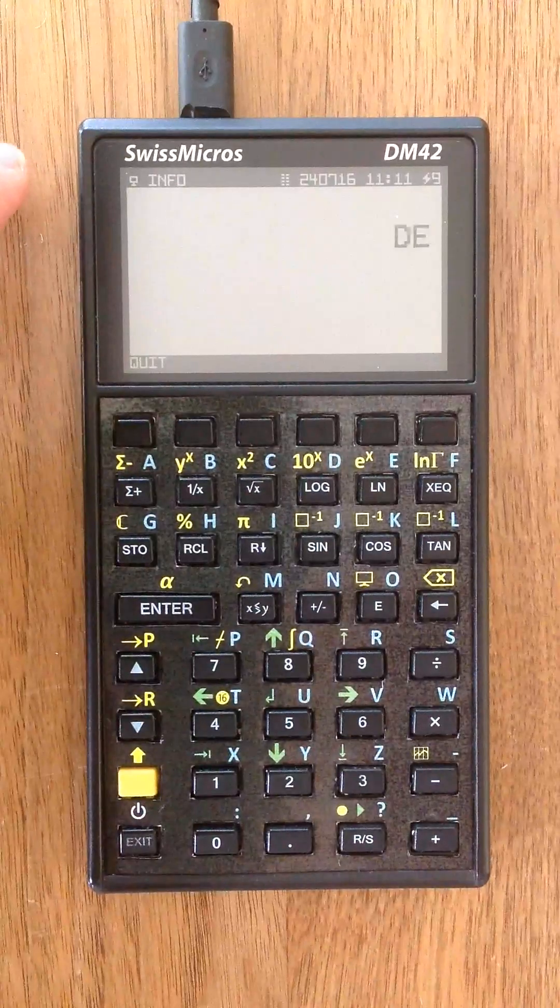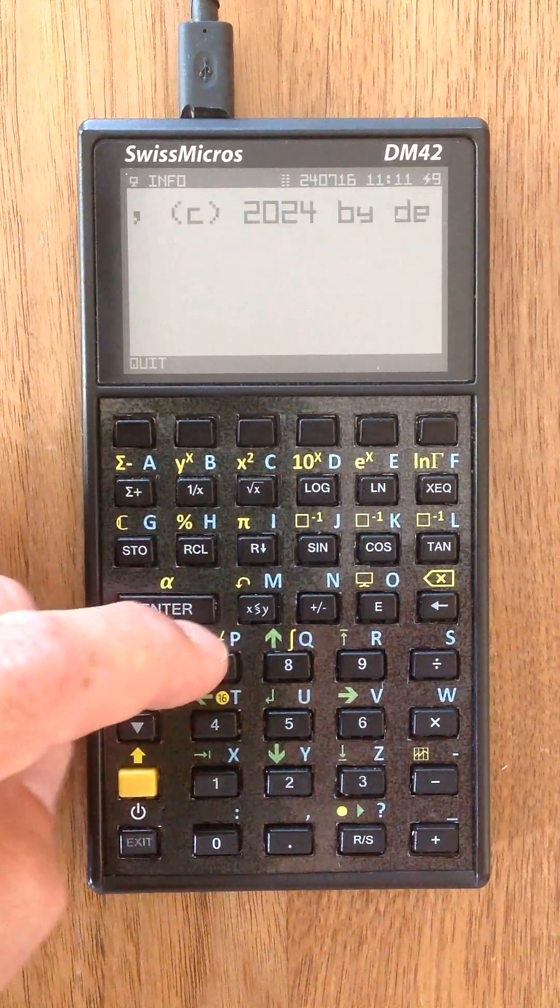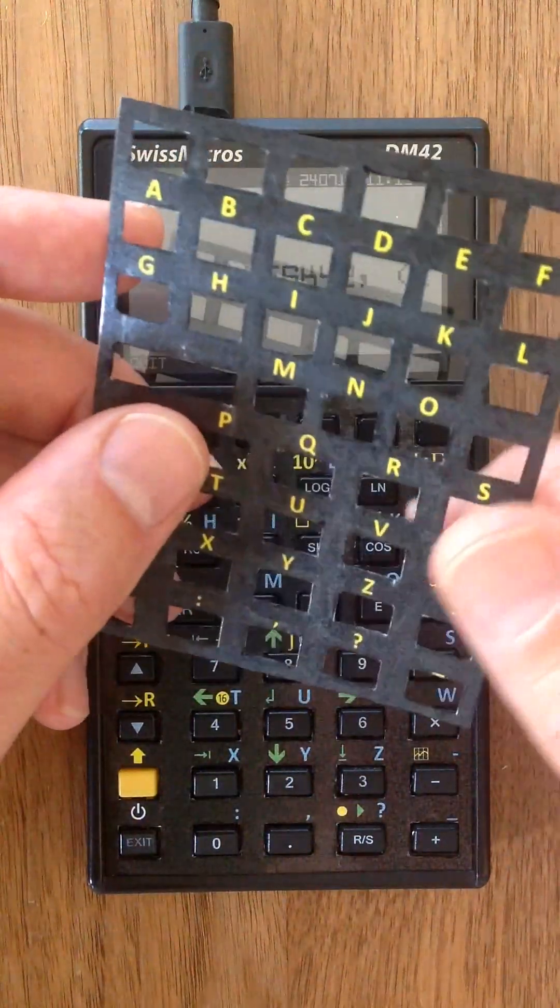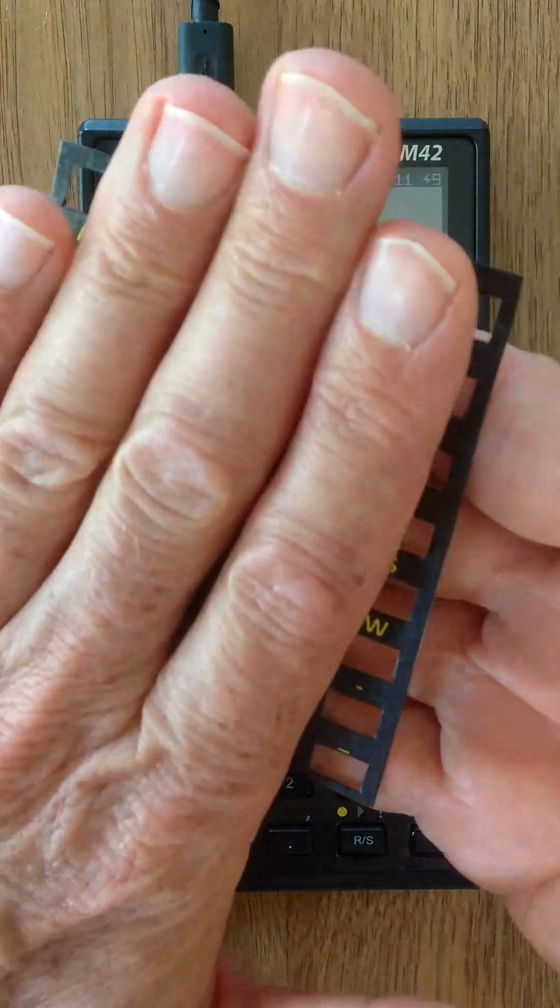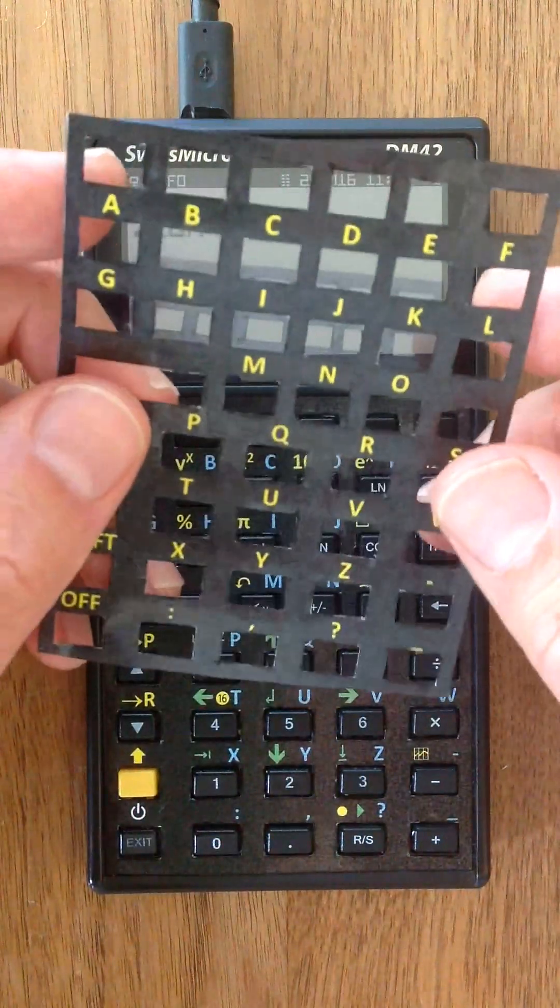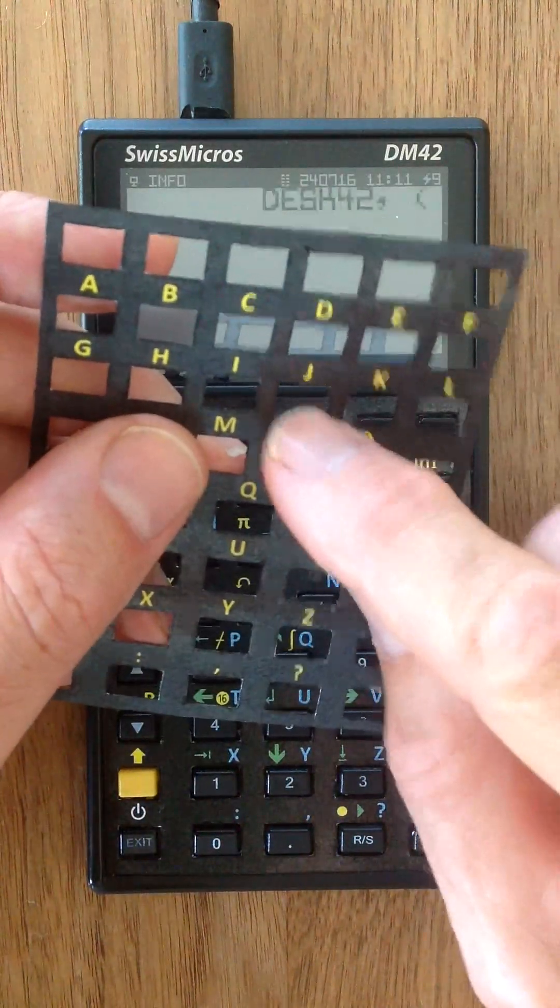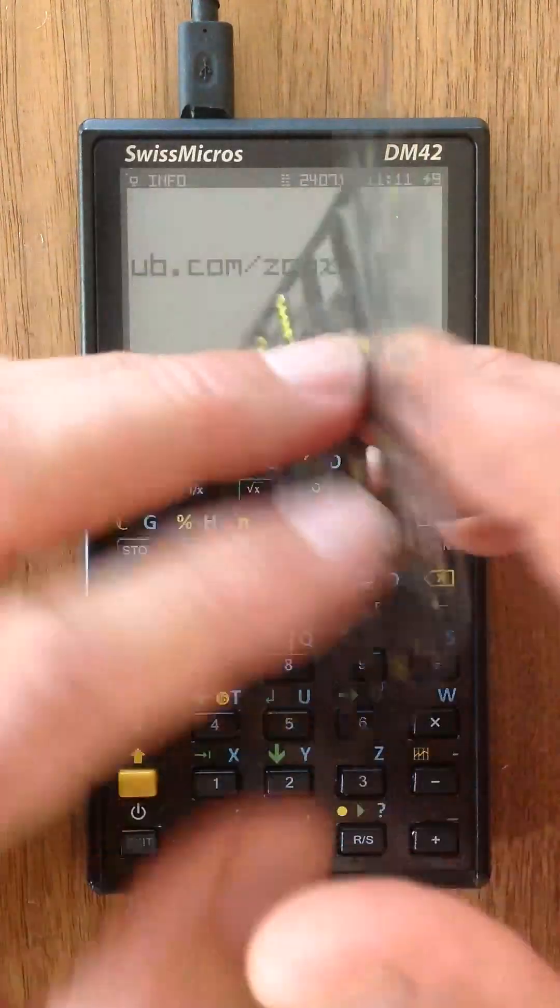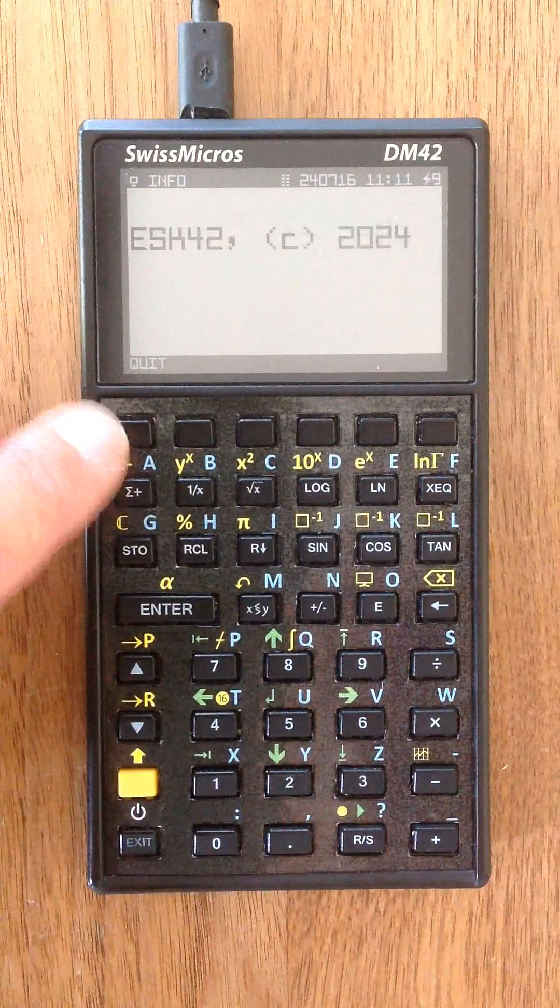But before I show you the application, some words about the keyboard overlay that I self-made. I just printed out a stencil, covered it on both sides with a book protection foil, cut the edges with a sharp knife, and painted them black with a Sharpie. Looks okay, at least for me.